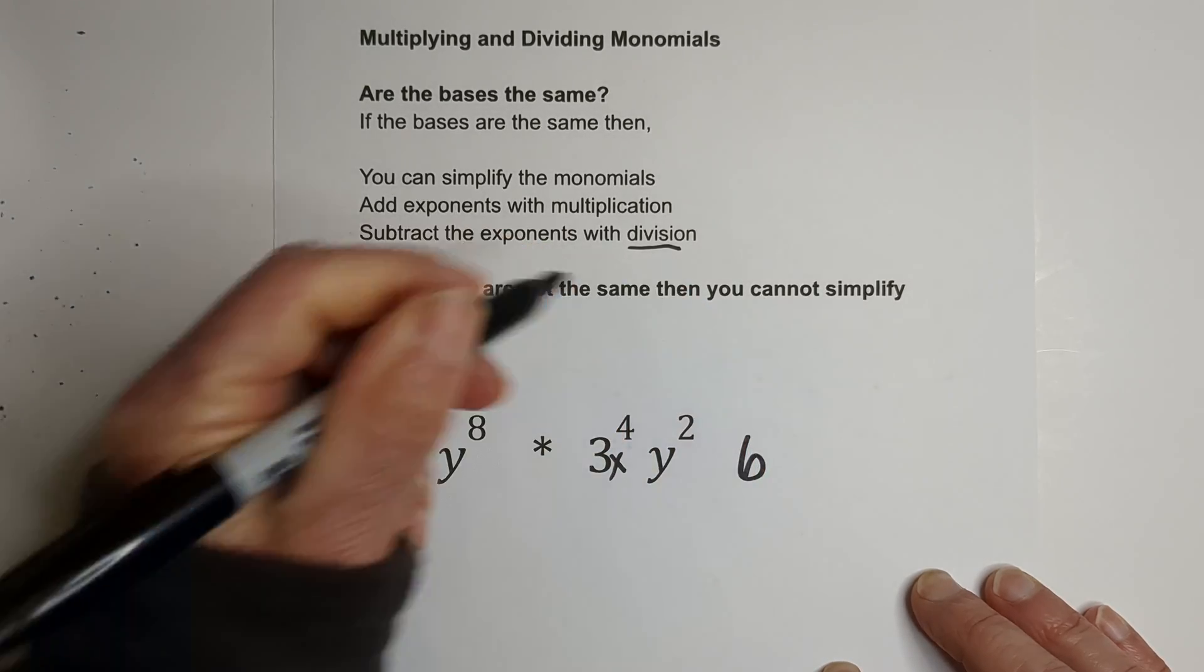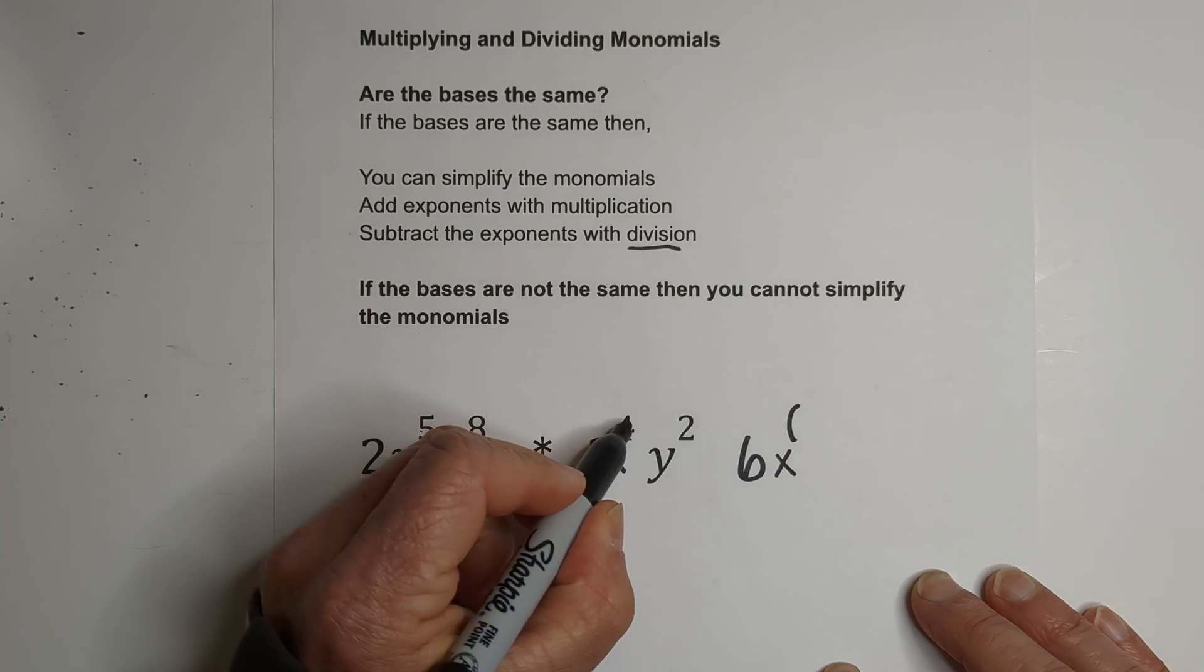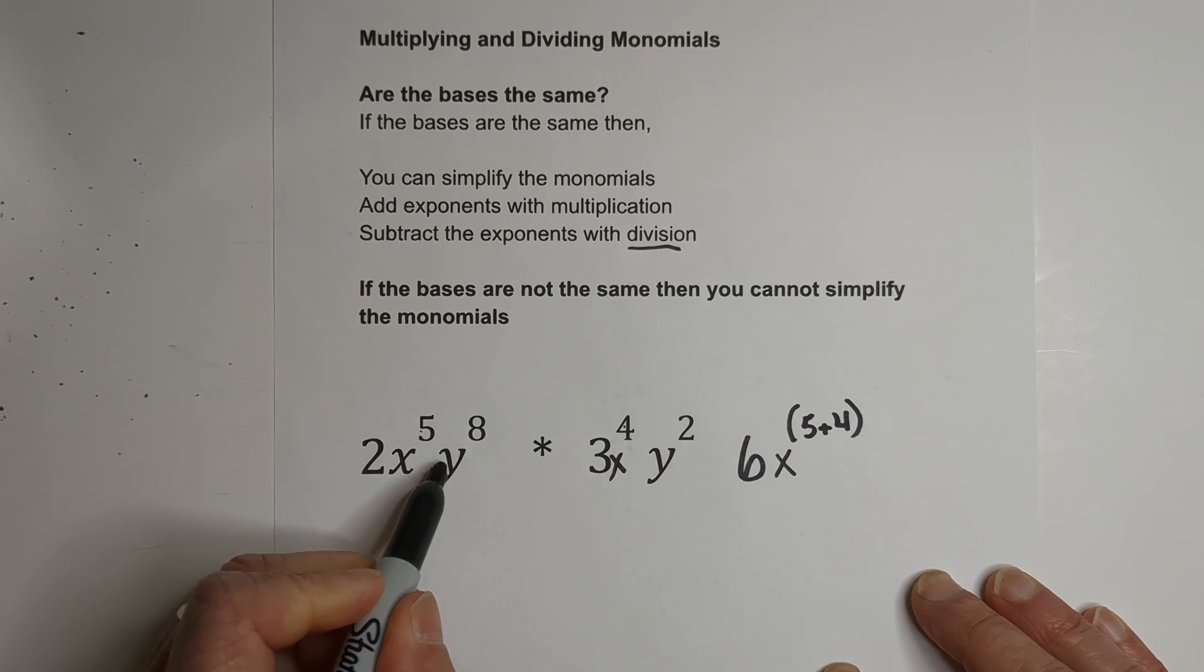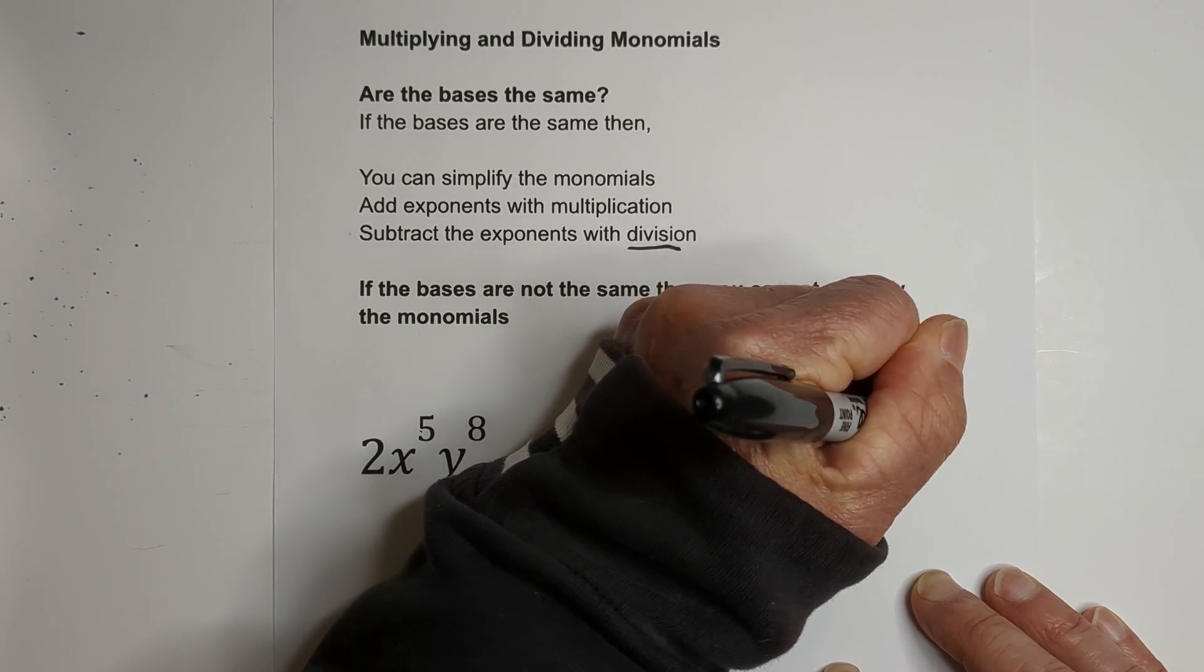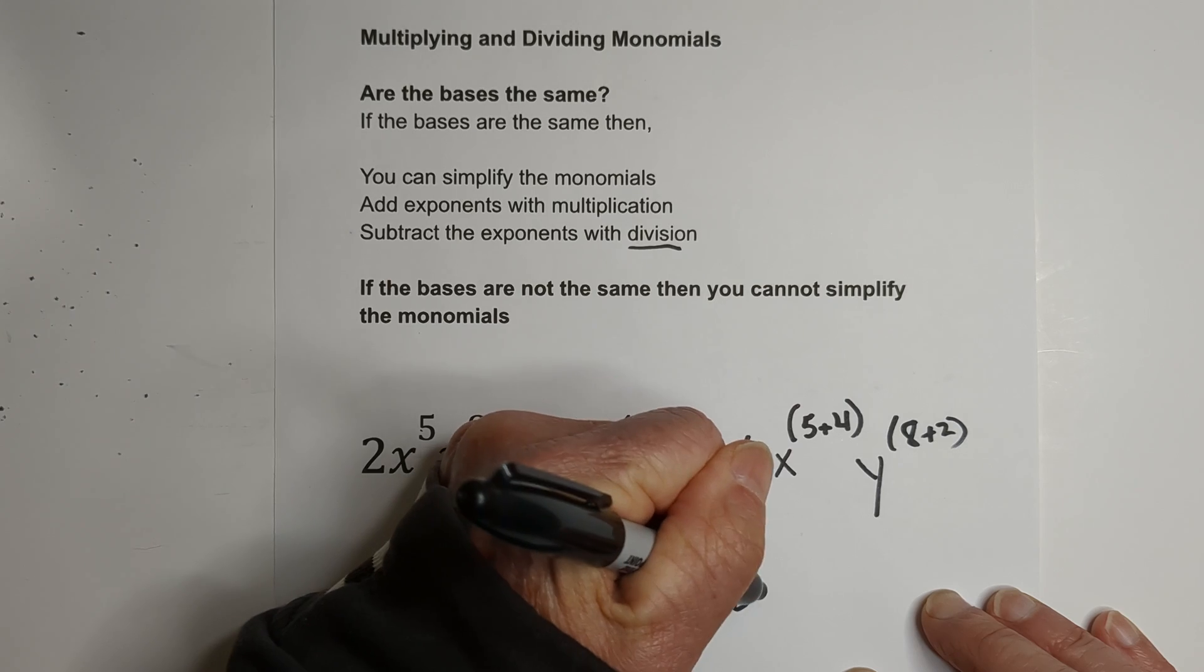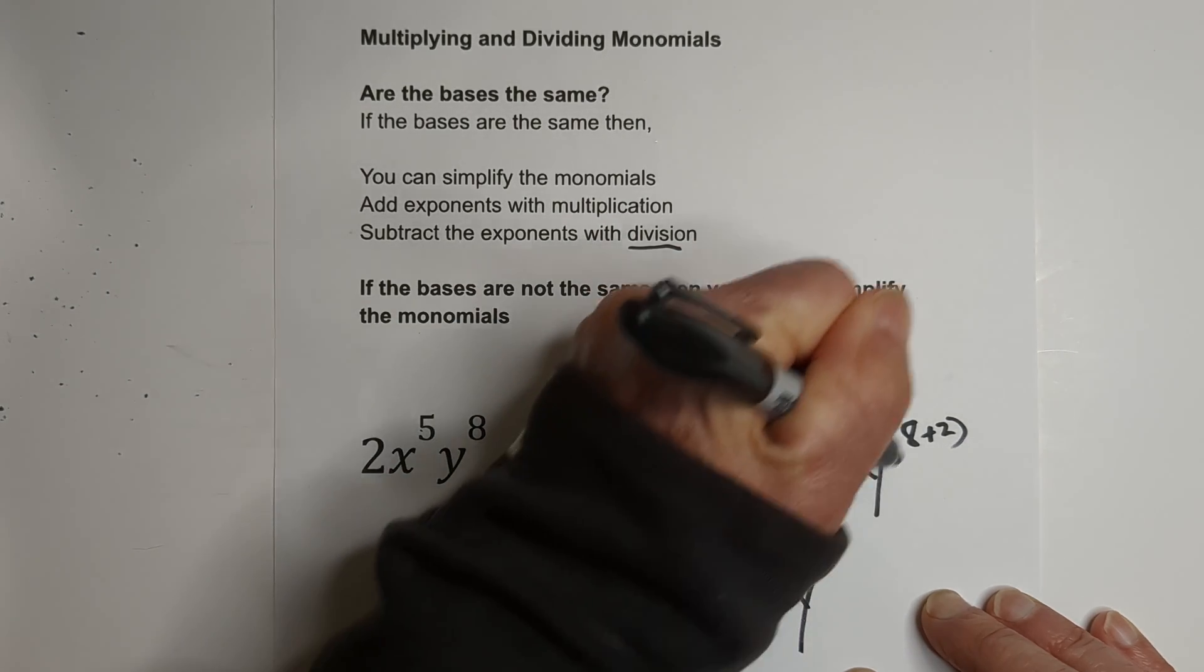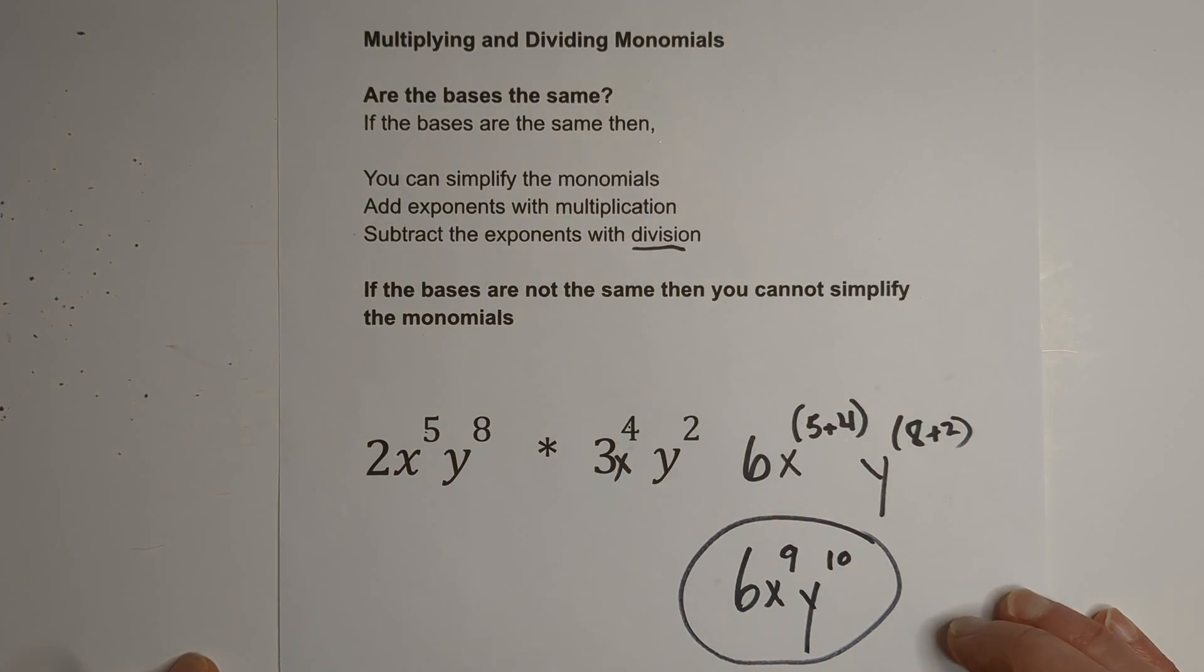2 times 3 is 6. And now for the X, remember we add 5 and 4. And then we have Y and Y, so we can combine them. And so we have 8 and 2. So let's bring this down. 6X, 5 plus 4 is 9. And for the Y, we have 8 plus 2. And that is 10. And so that is simplified.